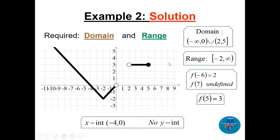The domain is (−∞, 0) ∪ (2, 5]. The range is [−2, +∞). f(−6) = 2, f(7) is undefined. f(3) — going to x = 3 gives y = 3. The x-intercept is (−4, 0). There is no y-intercept for this function.